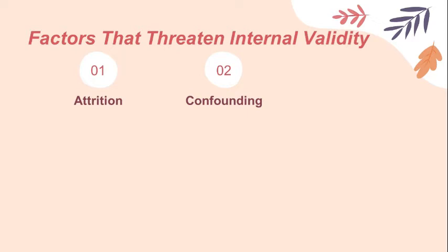The second is confounding — a situation in which changes in an outcome variable can be thought to have resulted from some third variable that is related to the treatment that was administered. The more chance for confounding in a study, the lower the internal validity and the less confident one can be in the findings.